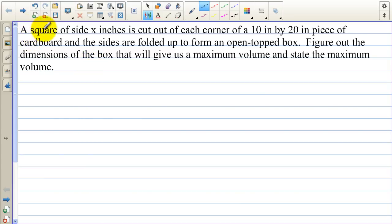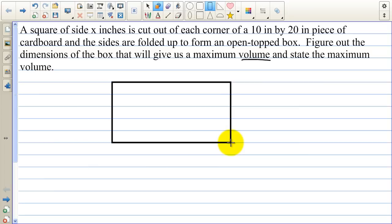In the first one, we have a square of side x inches is cut out of each corner of a 10 inch by 20 inch piece of cardboard, and the sides are folded up to form an open top box. Figure out the dimensions of the box that will give us a maximum volume and state what the maximum volume will be. Well, we're going to start out with a flat piece of cardboard. Here's our cardboard.